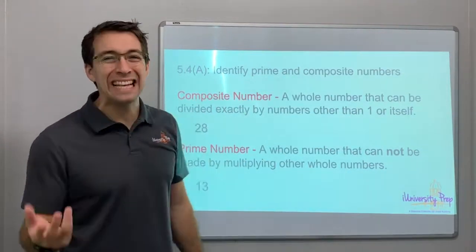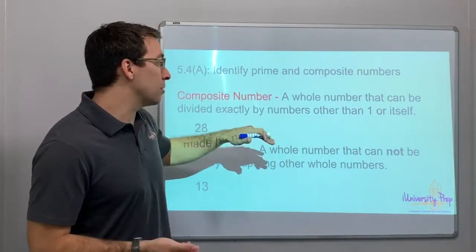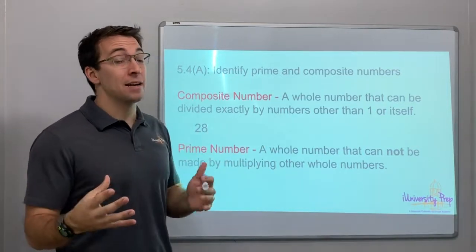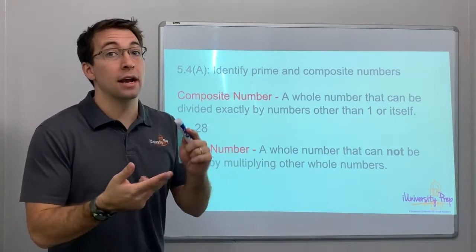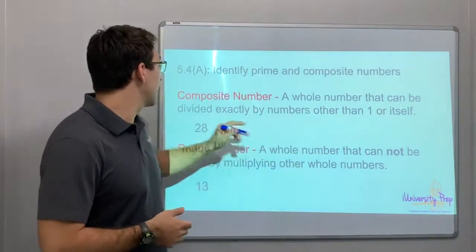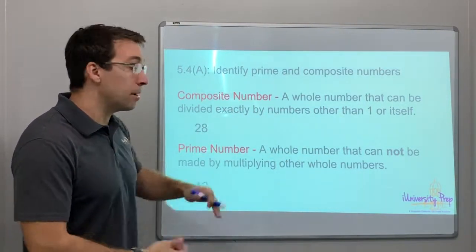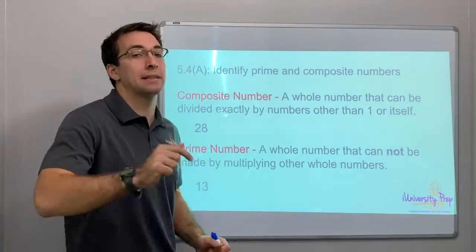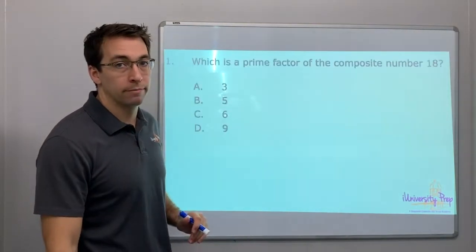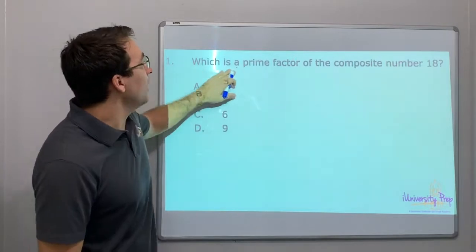What does that mean? A composite number is a number that could be divided by more than one and itself — a number that can be divided exactly by numbers other than one or itself. A prime number can only be divided by itself or one to make a whole number.